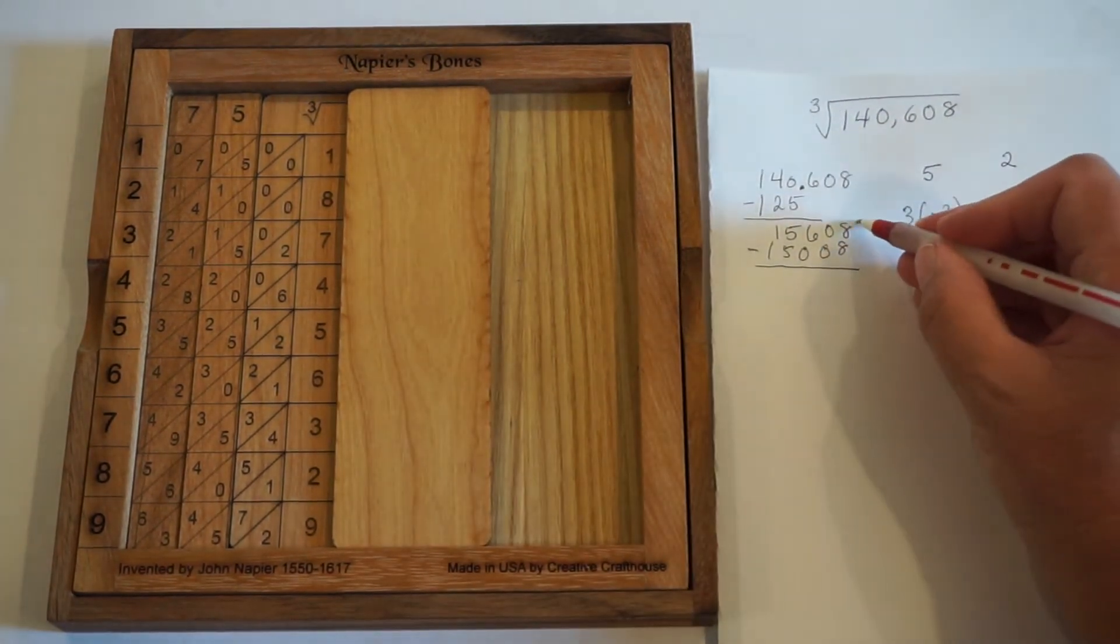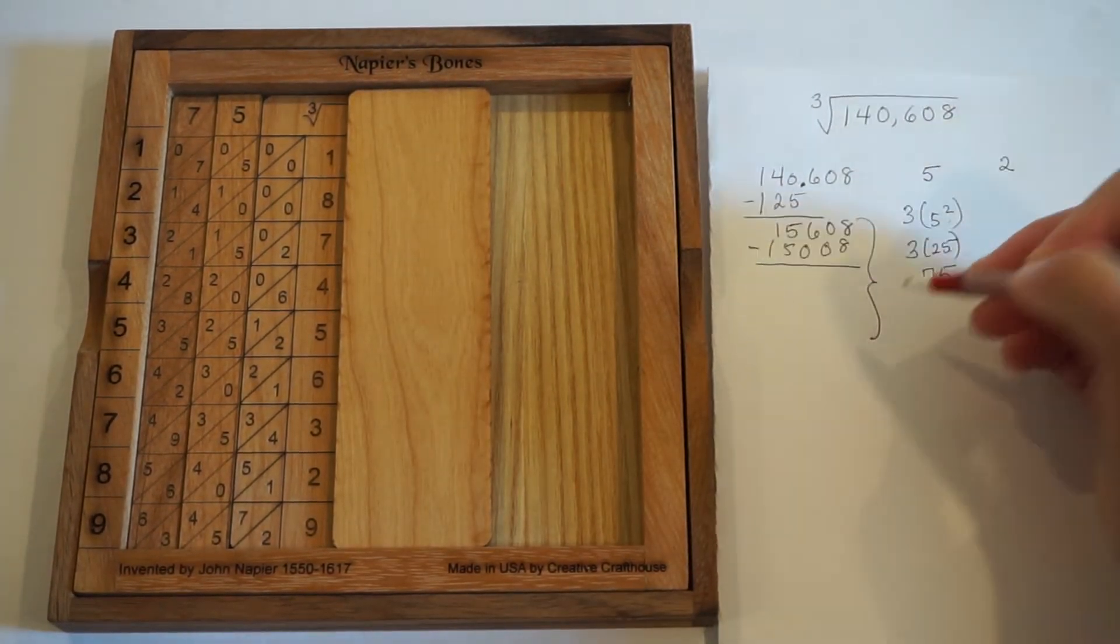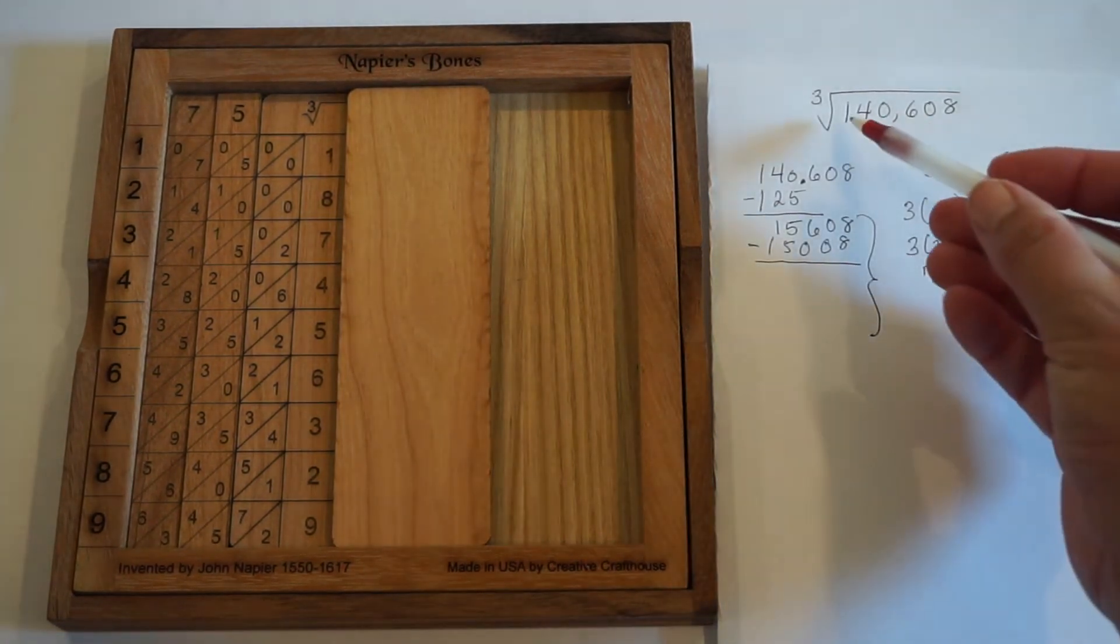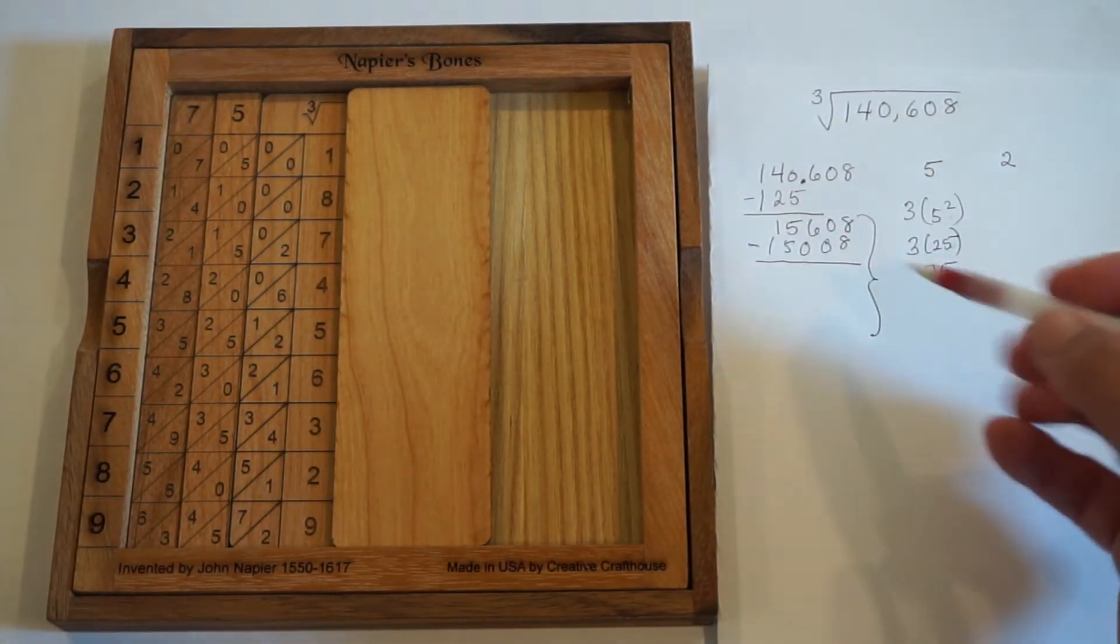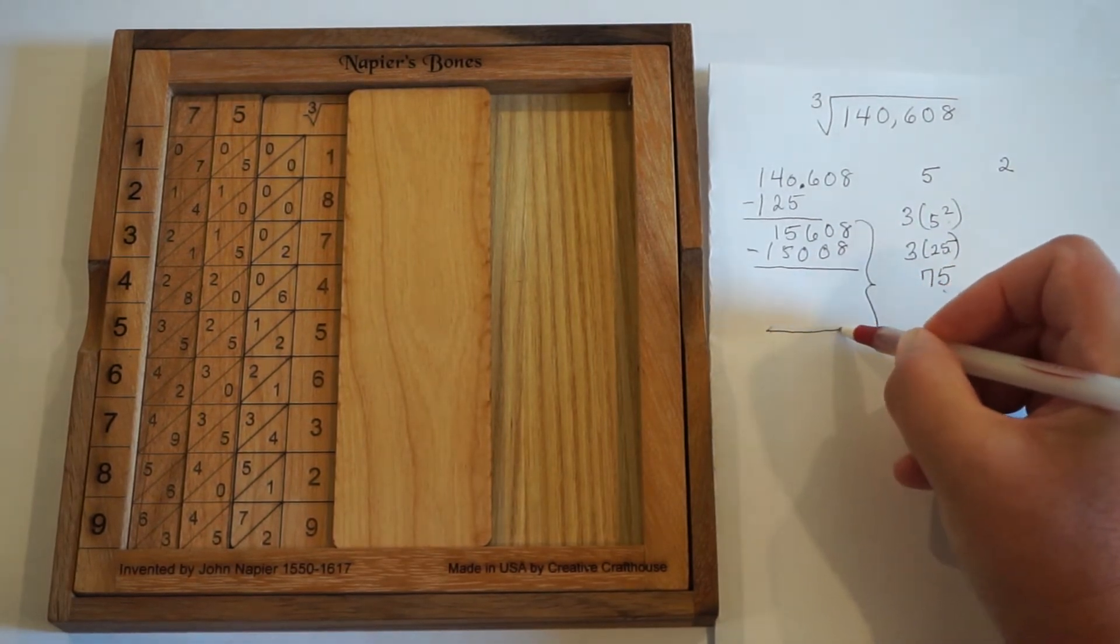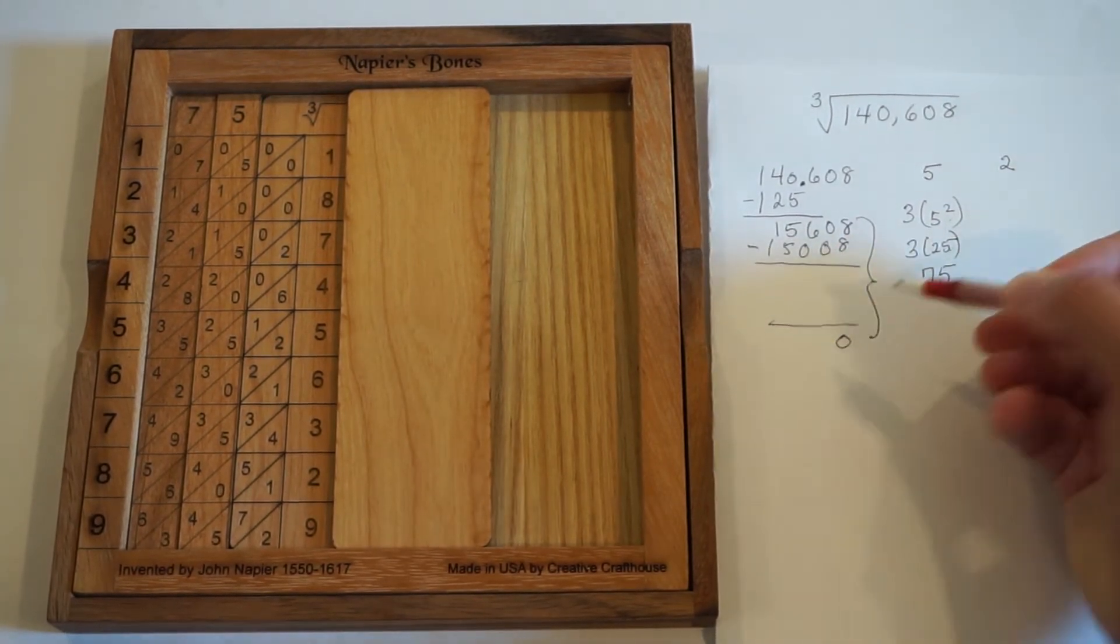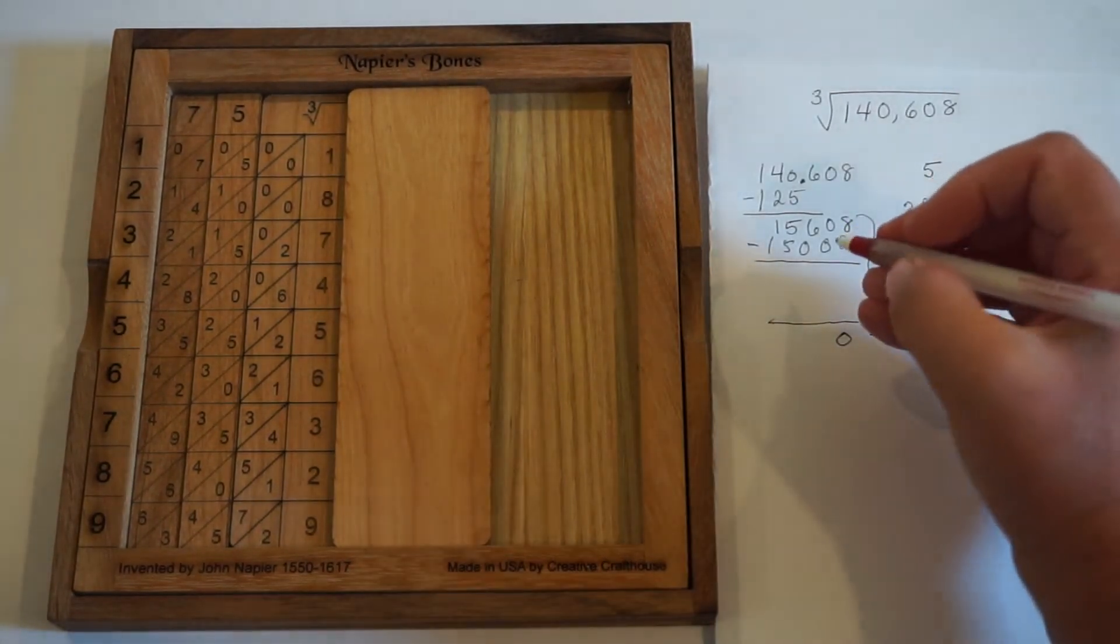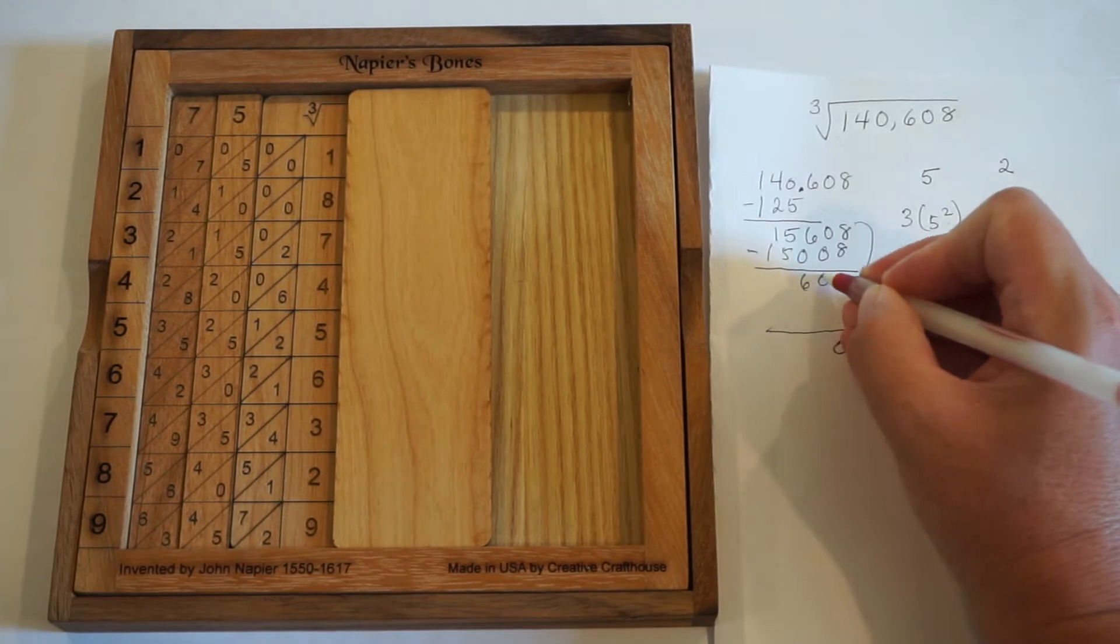Now for this second part, we're actually going to need to do two subtractions. If this number is a perfect cube, then once we've done our two subtractions, the result will be that we've used everything up. We get a zero. So let's go ahead and do this subtraction.